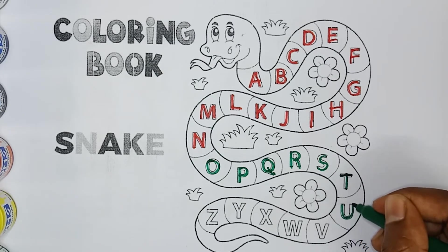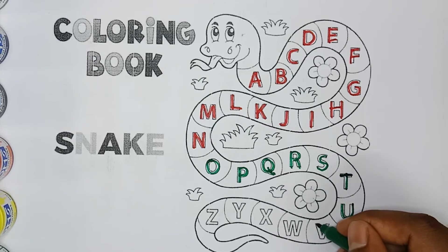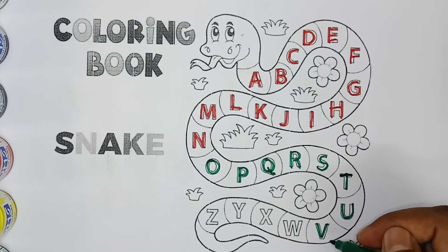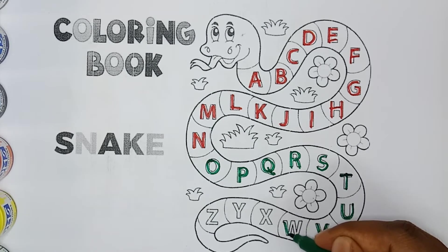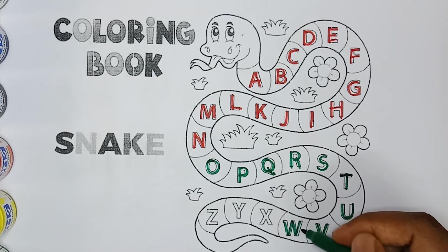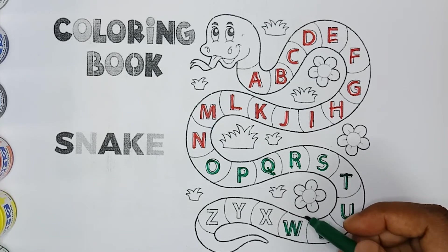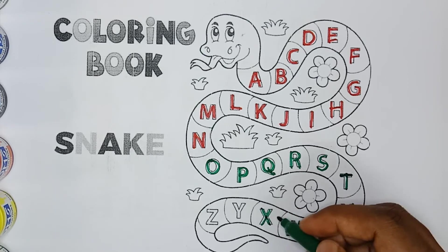U, U for umbrella, green color U. V, V for village, green color V. W, W for watermelon, green color W. X, X for X-ray, green color X.